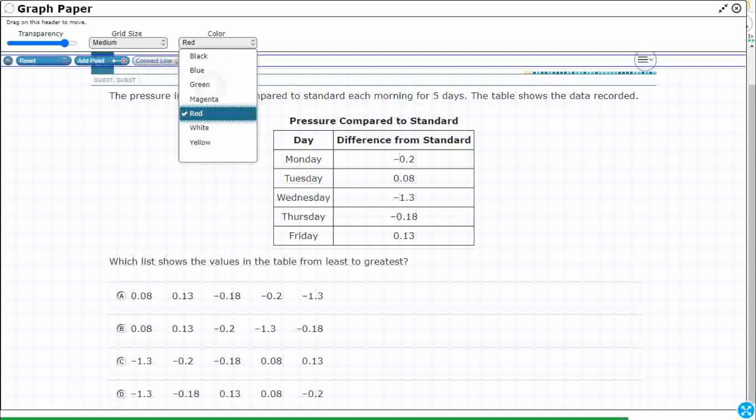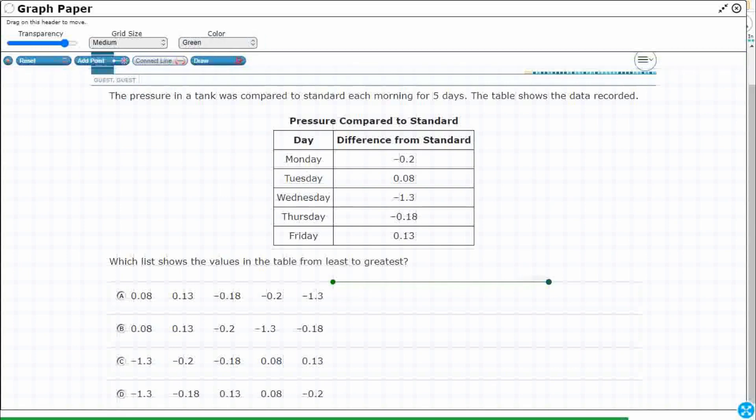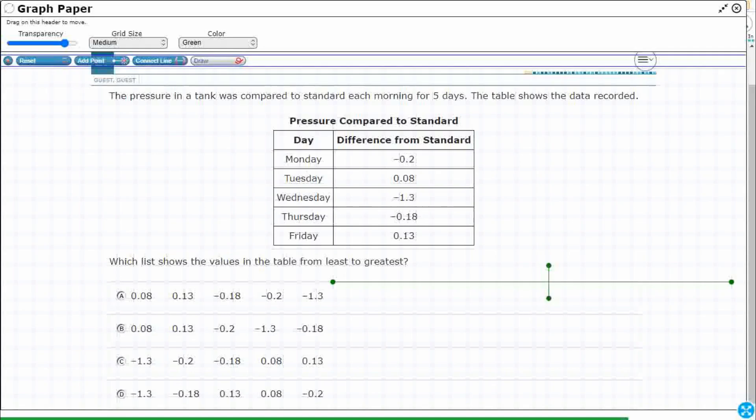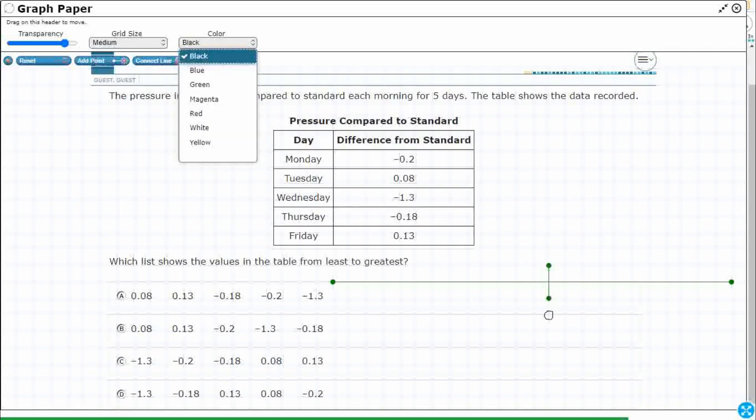Let's use the Connect Line feature. Hopefully you notice the fact that we've got some negatives and we've got some positives. So I'm going to draw something that's going to represent our number line, and I'm going to put a zero right here, because I'm wanting us to first take a look at the negatives that we have.